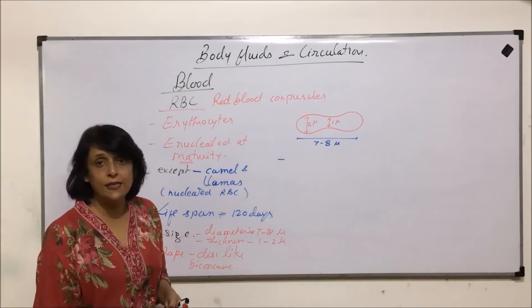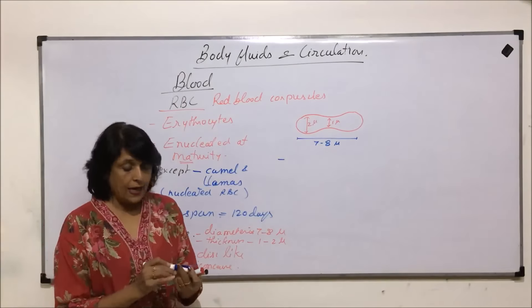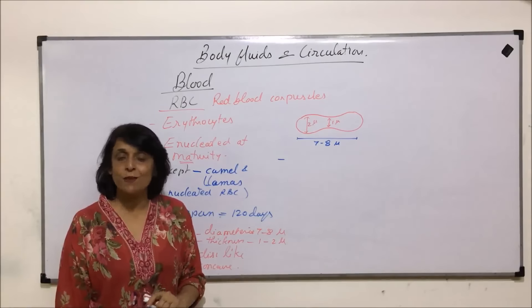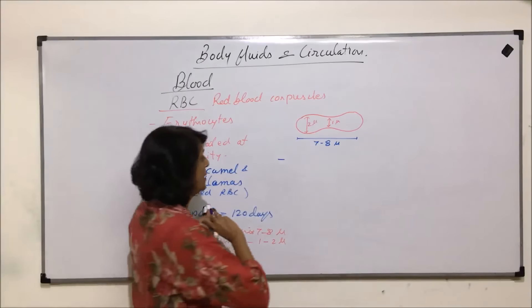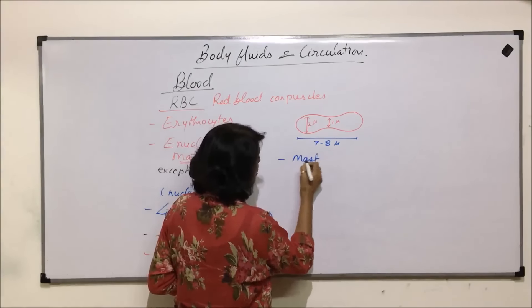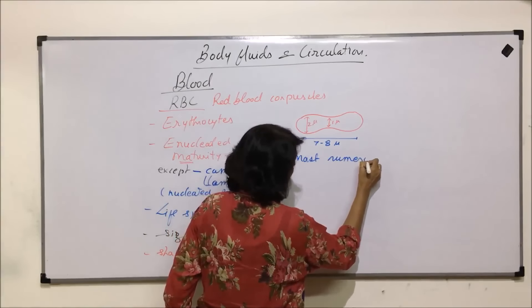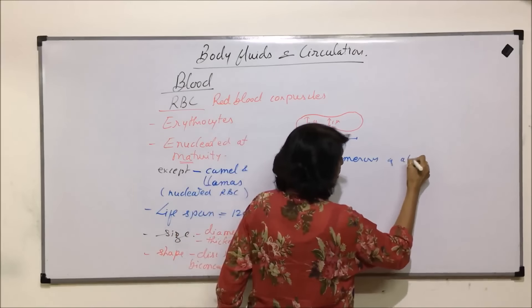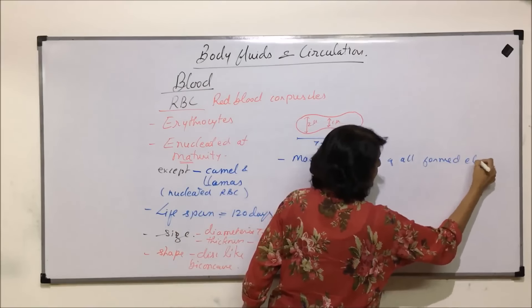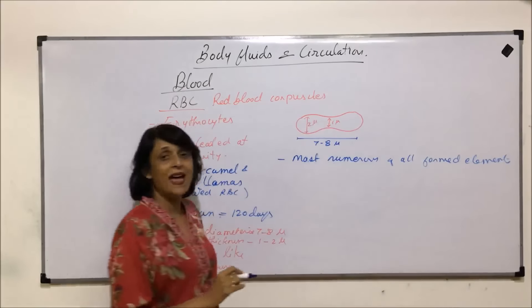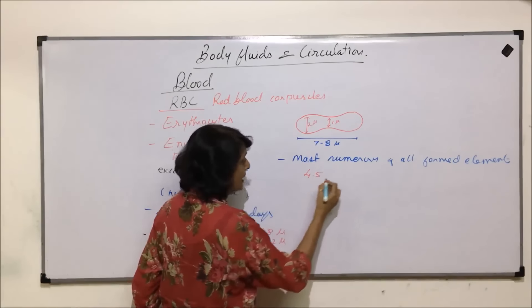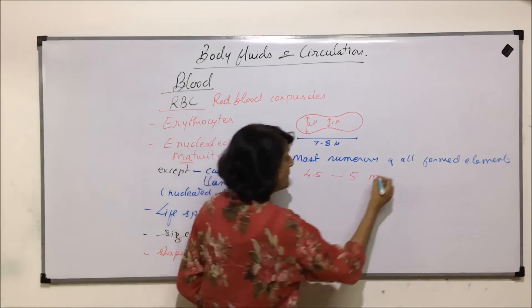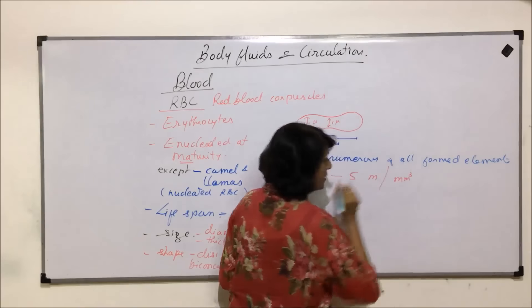Number of RBCs is different in males and females. But amongst all three cells which are present in plasma, that is RBCs, WBCs, and platelets, RBCs are the most numerous. So here we need to write that they are most numerous of all formed elements. That means maximum amongst all three.